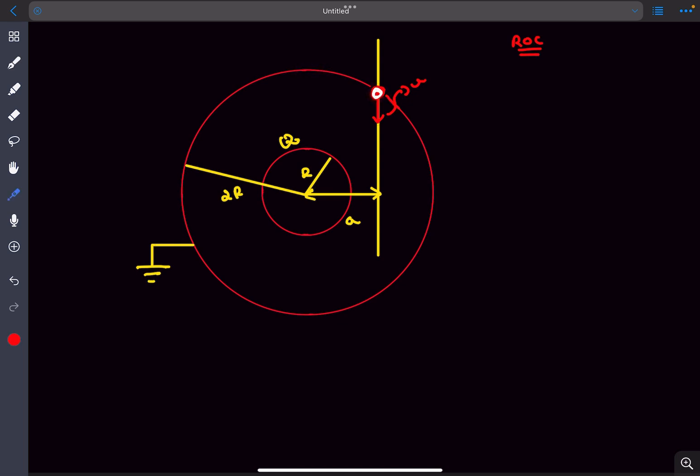Now let's say this angle over here is theta. Now a was given to be root 2r, so from this right triangle we can say sine theta equals, which means theta comes out to be 45 degrees.